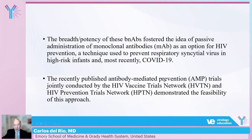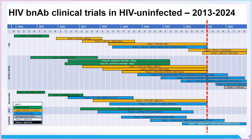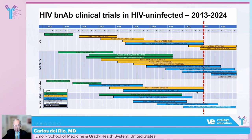The recently published Antibody Mediated Prevention Trial, or AMP studies, were conducted by the HVTN and HPTN. This study demonstrated the feasibility of this approach, even though the results were not as encouraging as we would have liked. Here is a graph depicting HIV BNAb clinical trials in HIV-unaffected individuals. The only phase 2b studies are HVTN 703, 704, and HPTN 081/085, which constitute the AMP study. At least one additional phase 2 study is planned using another monoclonal antibody.